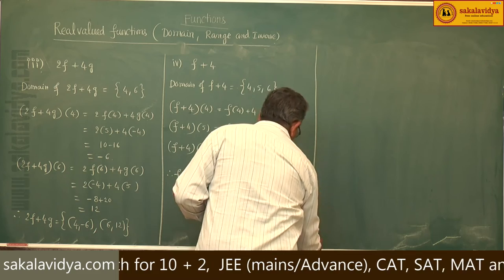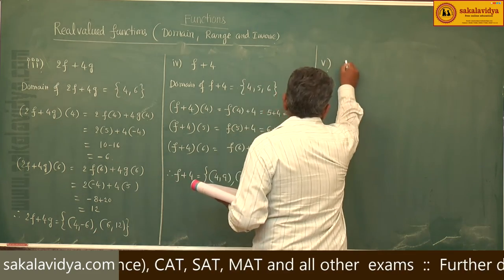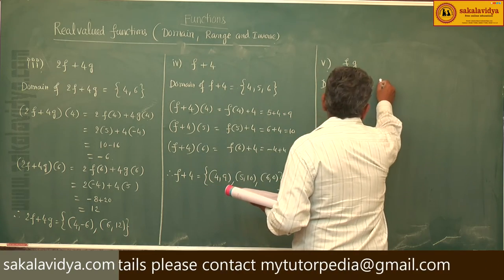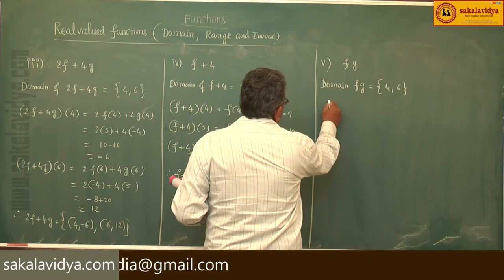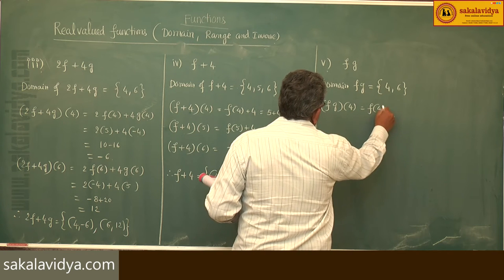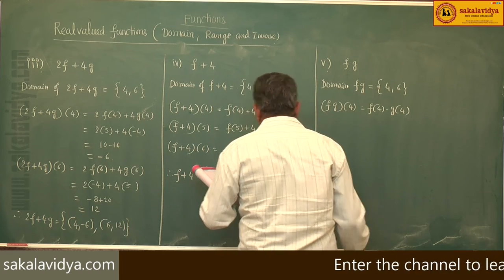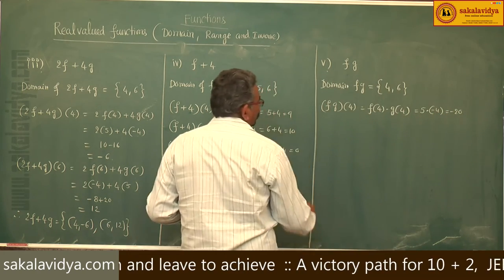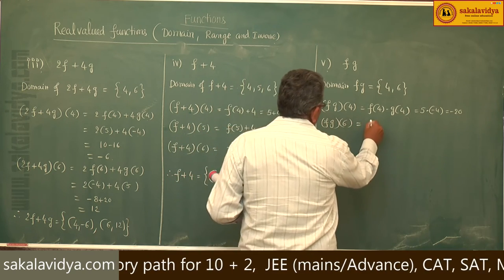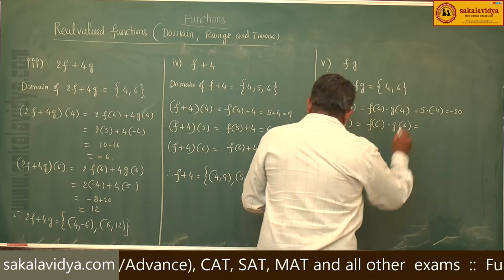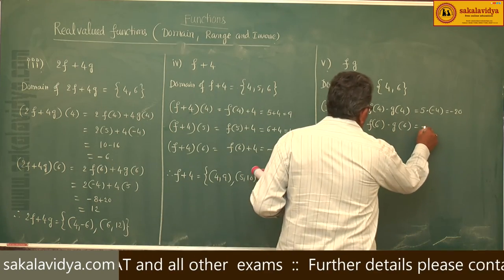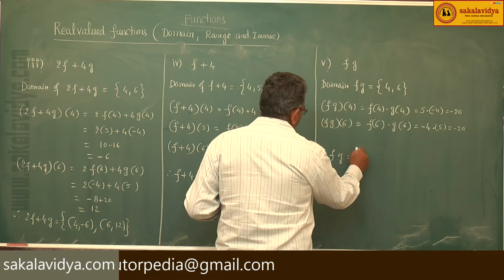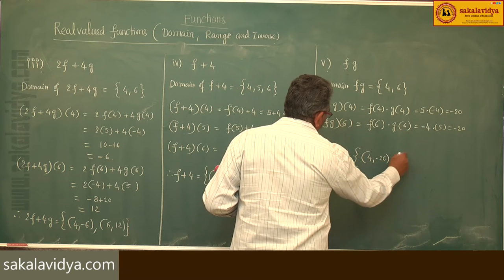Fifth problem: fg. Domain of fg is {4, 6} only. Now, fg of 4 equals f of 4 into g of 4. f of 4 is 5, g of 4 is minus 4, so minus 20. So, fg of 6 equals f of 6 into g of 6. f of 6 is minus 4 and g of 6 is 5, again minus 20. Therefore, fg equals {(4, minus 20), (6, minus 20)}.